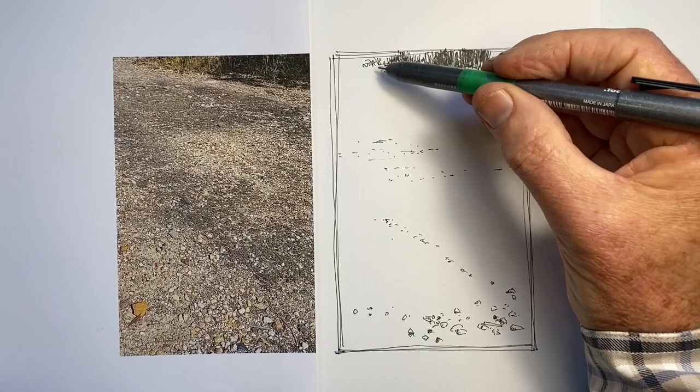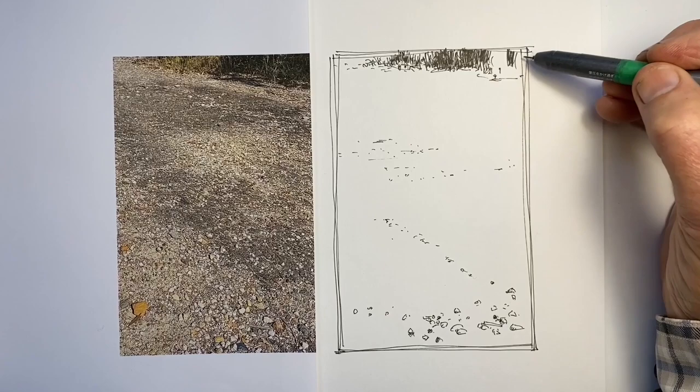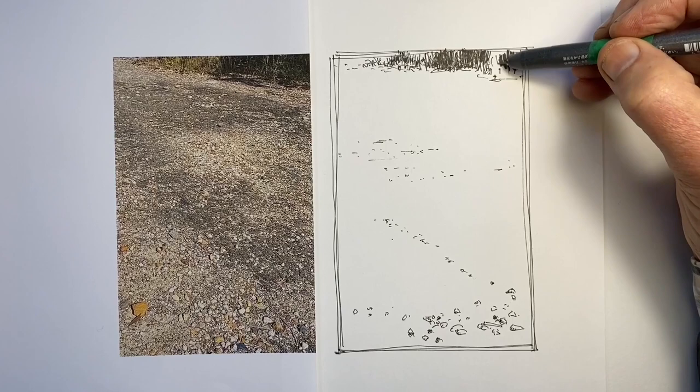And once I've done that, I need to work out exactly how I'm going to draw the gravel that's right at this far end. Because it really is establishing the closest, the furthest, and then working out the transition.